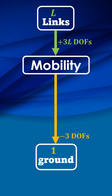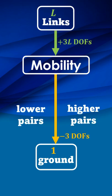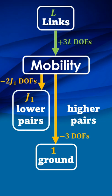Links are connected together with lower and higher kinematic pairs. Each lower pair blocks two degrees of freedom. If J1 lower pairs are used, two times J1 degrees of freedom are consumed by the lower pairs.